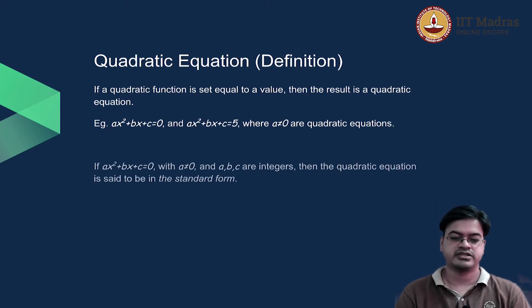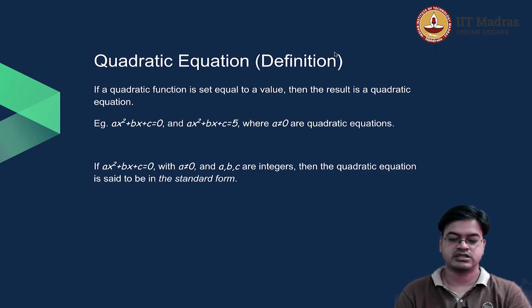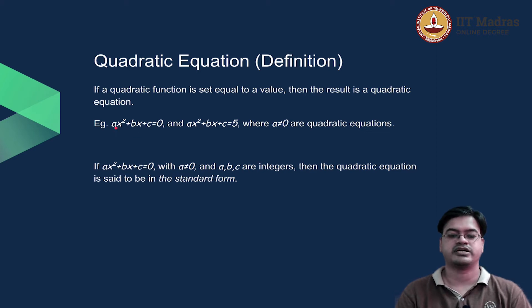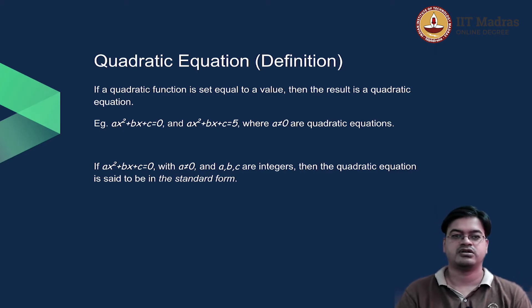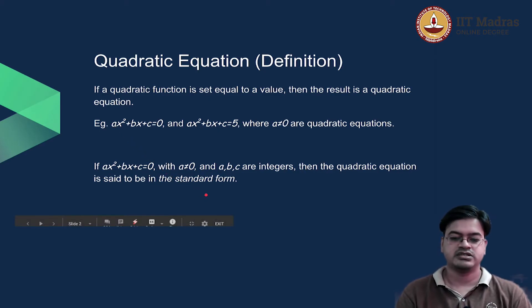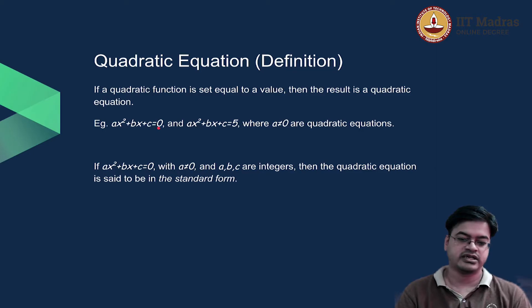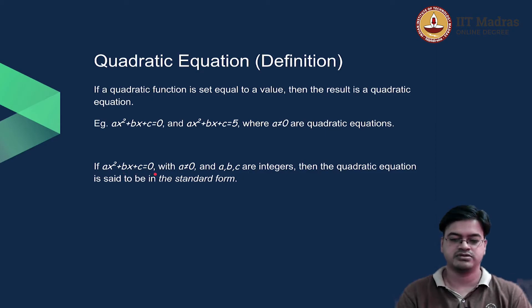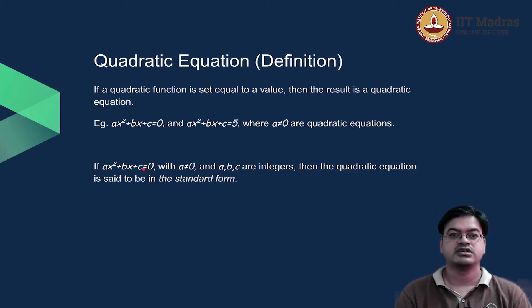Once we have a quadratic equation, what are the coefficients? Coefficients are like a, b, and c — these are called coefficients of the quadratic equation. If the coefficients a, b, c are integers and the right-hand side is equated to 0 — that is, ax² + bx + c = 0 where a ≠ 0 and a, b, c are integers — then the quadratic equation is said to be in standard form.